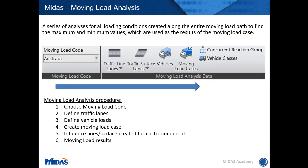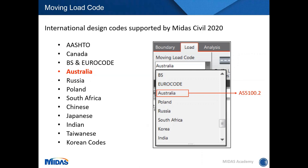Moving load analysis in Midas represents a series of analyses for all loading conditions created along the entire moving load path to find maximum and minimum values. The procedure is: select the moving load code, define traffic lanes, define vehicles, set up the moving load case, and when you click run, the software first performs an influence line analysis and then generates moving load results.